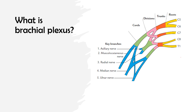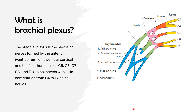Let's understand what we mean by brachial plexus. Brachial means arm and plexus means a network. So brachial plexus is a plexus of nerves which are formed by the anterior or ventral rami of C5, C6, C7, C8 and T1 spinal nerves. Sometimes they may receive a contribution from C4 or T2. If it receives a contribution from C4, we call it a prefixed brachial plexus, and if from T2, a postfixed brachial plexus.